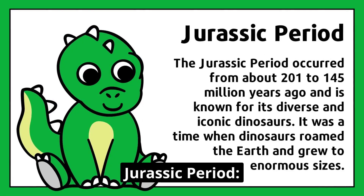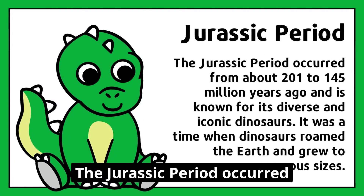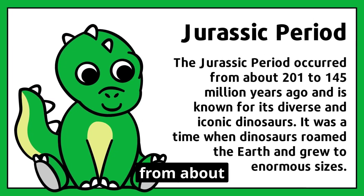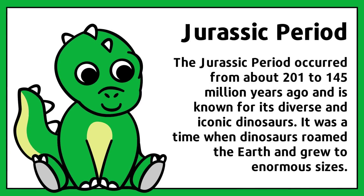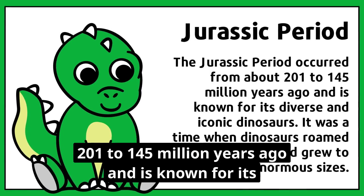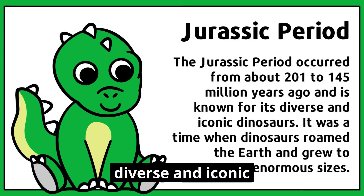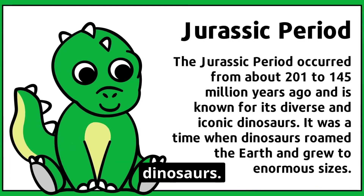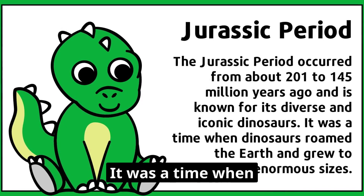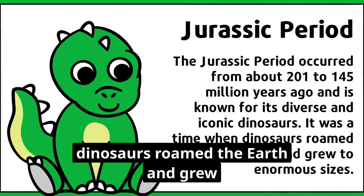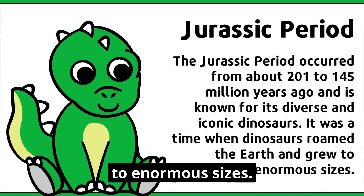The Jurassic Period occurred from about 201 to 145 million years ago and is known for its diverse and iconic dinosaurs. It was a time when dinosaurs roamed the earth and grew to enormous sizes.